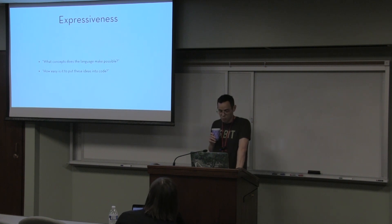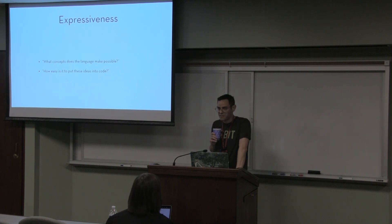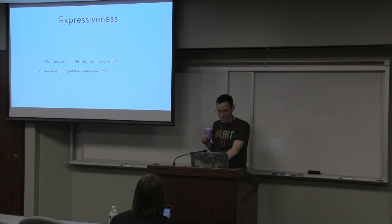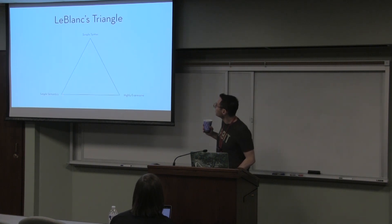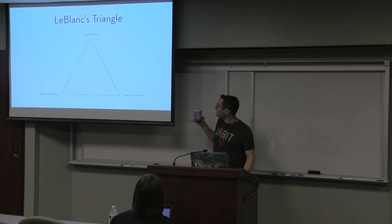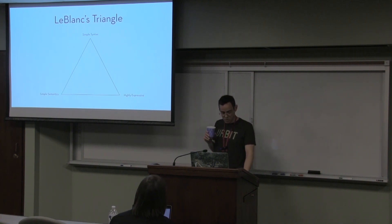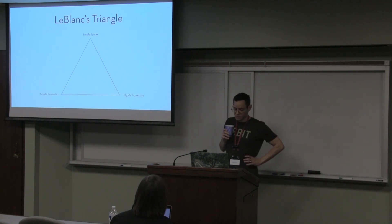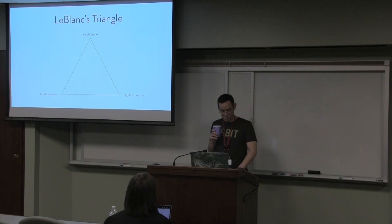The third point is expressiveness — what concepts does the language make possible, or how easy is it to put them in code? You can write a Fortran compiler in Brainfuck if you want to, but it doesn't make that easy. So here's my diagram — the most important slide here. This is LeBlanc's Triangle. The idea is like 'pick any two': you can have simple syntax, simple semantics, or something highly expressive, but you can't have all three. Hoon has really simple semantics and expresses a lot with it — it just has clunky syntax.